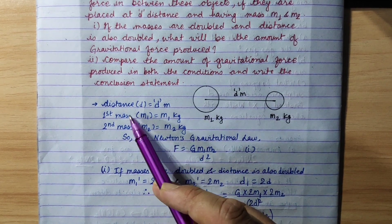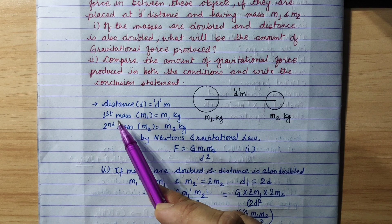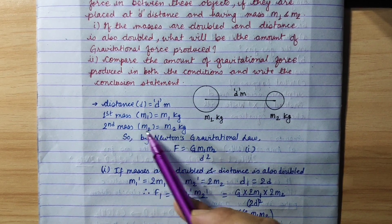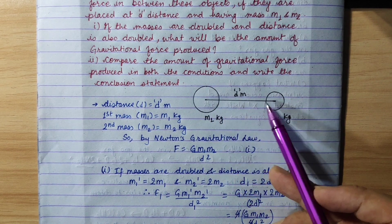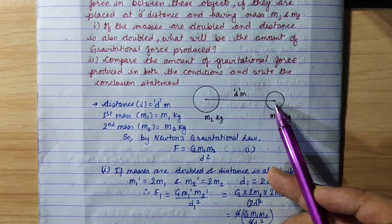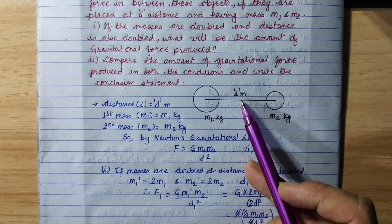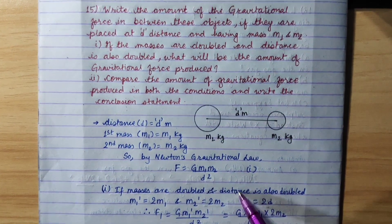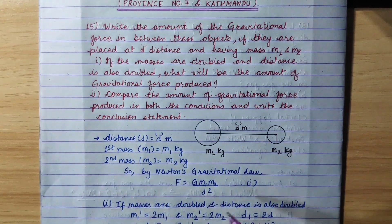In this diagram, the distance is d meters. The first mass is m1 kg and the second mass is m2 kg. So, in the first question, the amount of gravitational force will be given.